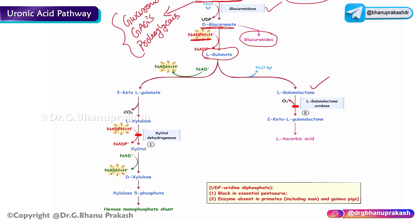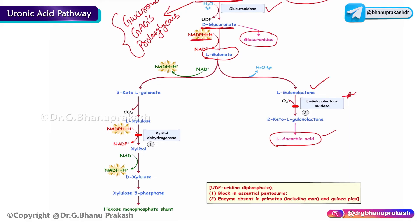L-gulonate gets converted to L-gulonolactone, which can then be converted to L-ascorbic acid, mediated by the enzyme L-gulonolactone oxidase. However, this enzyme is absent in humans and higher primates, so we cannot synthesize ascorbic acid (vitamin C) in our body — we must obtain it through diet. This step is not relevant to humans.